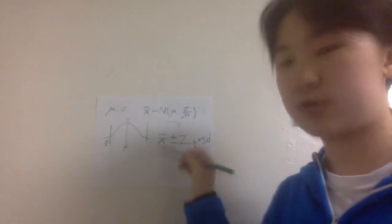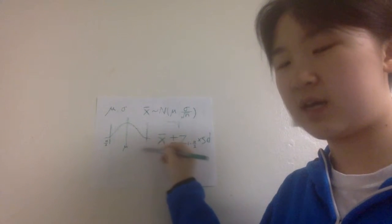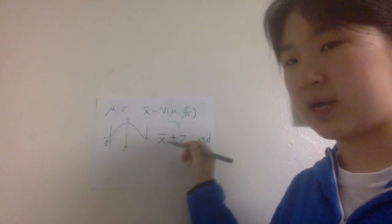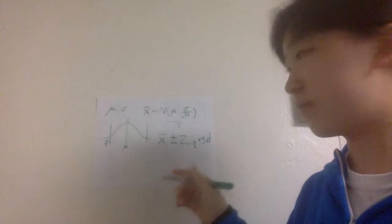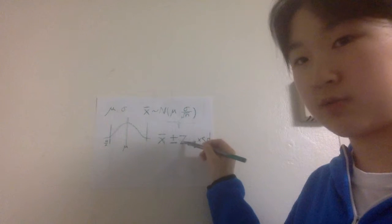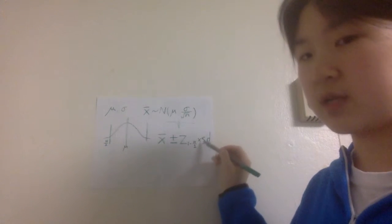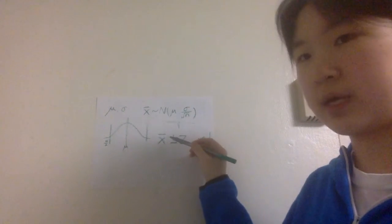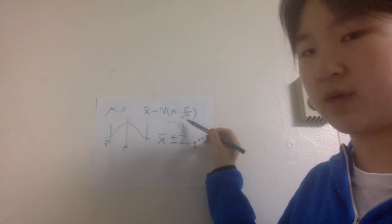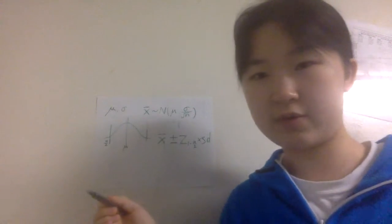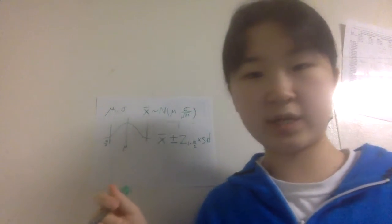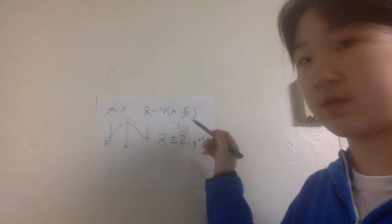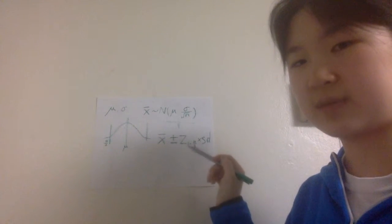If you compute the corresponding z-score, this z-value will be z of 1 minus alpha over 2. The center of your interval is x-bar, and the margin of error of your confidence interval will be the critical z-score — z of 1 minus alpha over 2 — times the standard deviation of the sample statistic. In this case, the standard deviation of x-bar is sigma over square root of n. So the confidence interval for a confidence level of 1 minus alpha goes from x-bar minus z(1 - alpha/2) times sigma over square root of n, to x-bar plus z(1 - alpha/2) times sigma over square root of n.